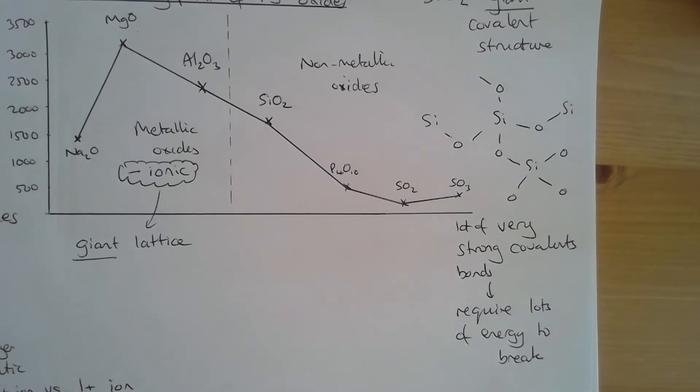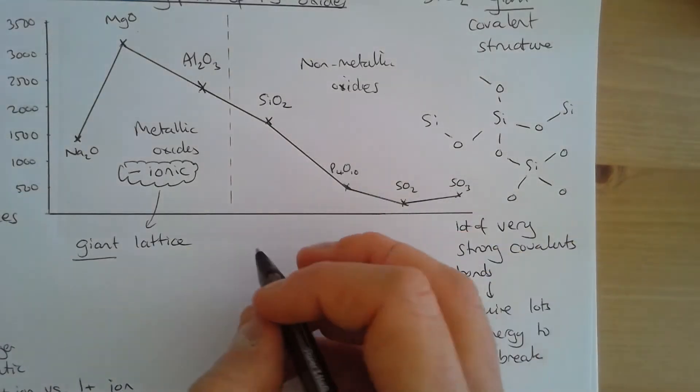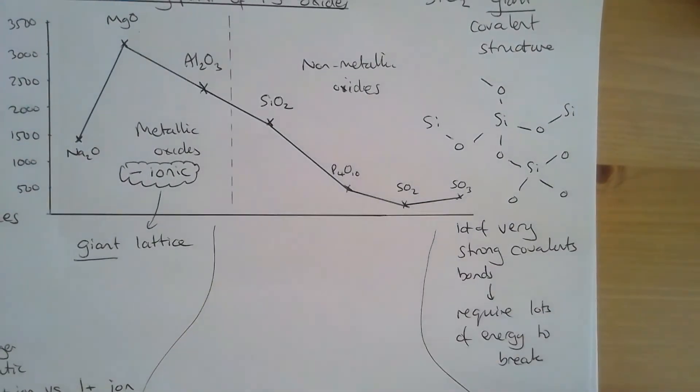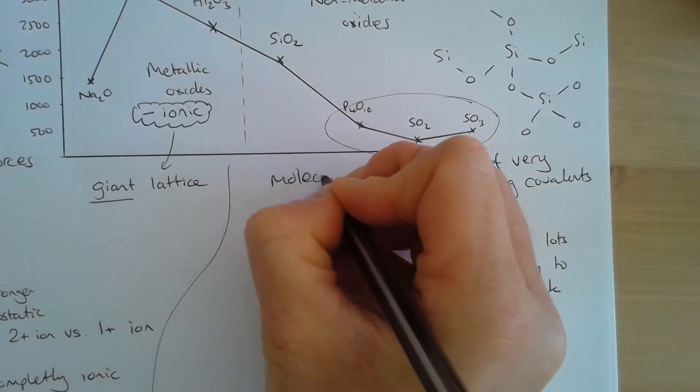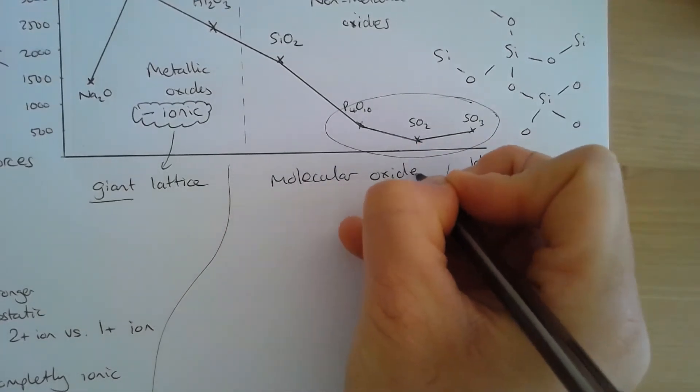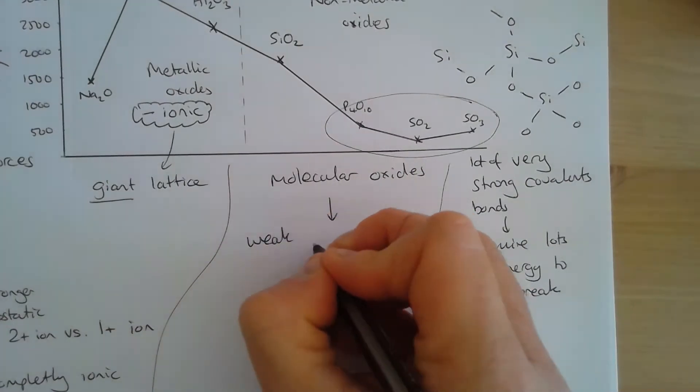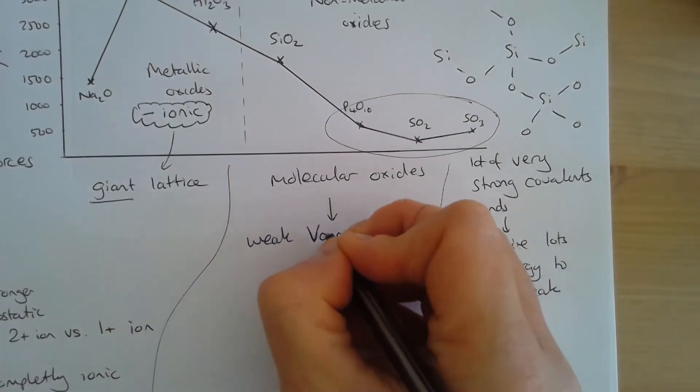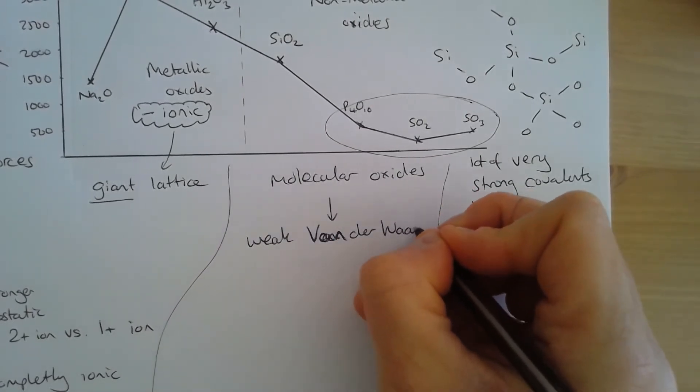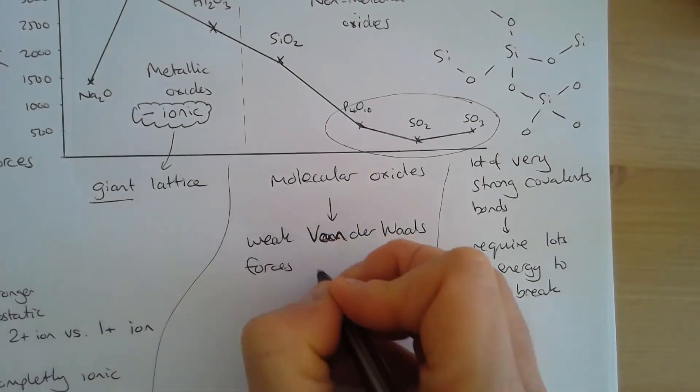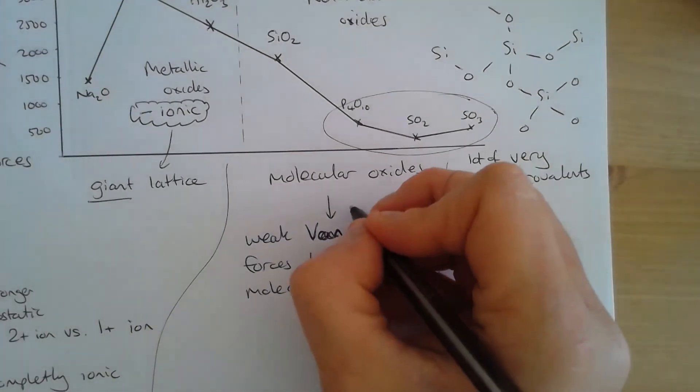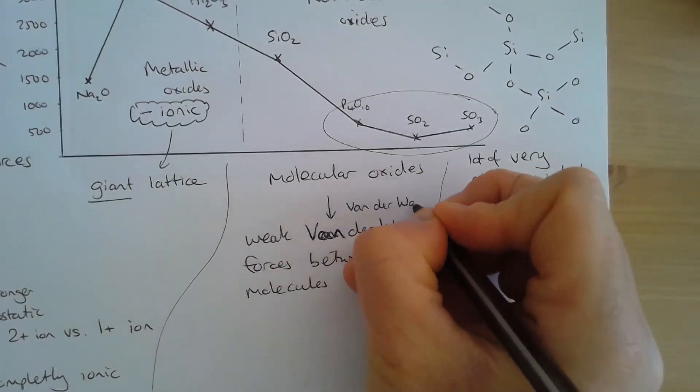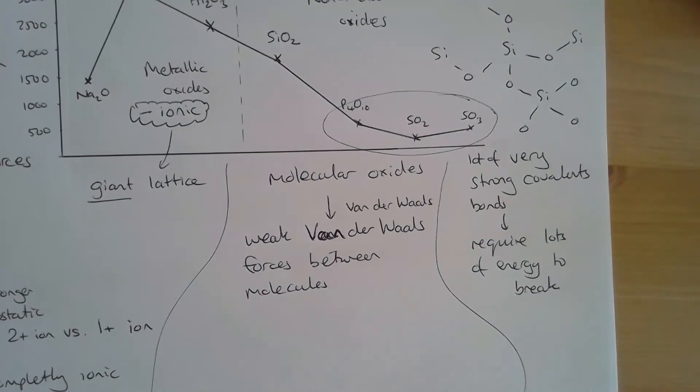So let's finally have a look at our three remaining ones here. So let's get a bit of space on my paper. Remember, these three are simply molecular oxides. Our molecular oxides have weak Van der Waals forces. So we've got weak Van der Waals forces between the molecules. So I've written that really badly there. That should say Van der Waals. So we've got weak Van der Waals forces between the molecules. These require relatively little energy to break.